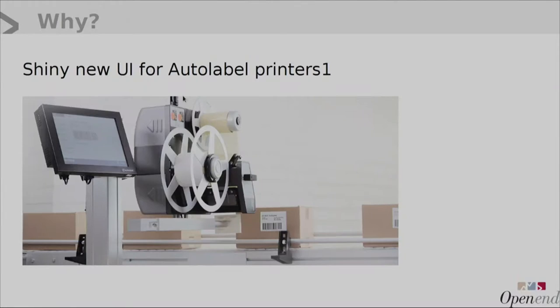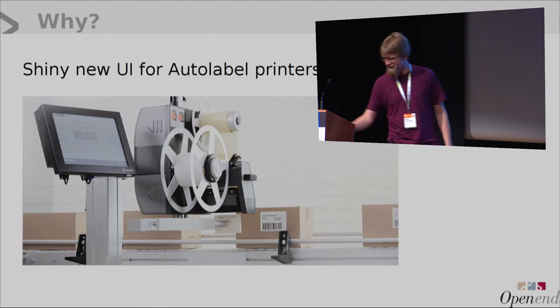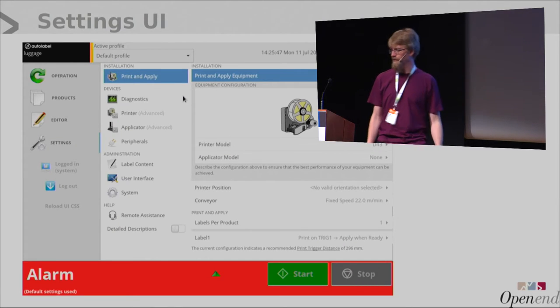The other things we will be talking about is a bit of GTK, which is the GUI library we used. Autolabel makes these cool labeling printers — the printer prints out the label and has an arm that sticks it onto the box. It's time to revise the software. The display you see is all Python in a GTK interface, currently running Python 2.5 and GTK 2. We're upgrading it to Python 2.7 and GTK 3, and this is what the new user interface will look like once it's done.